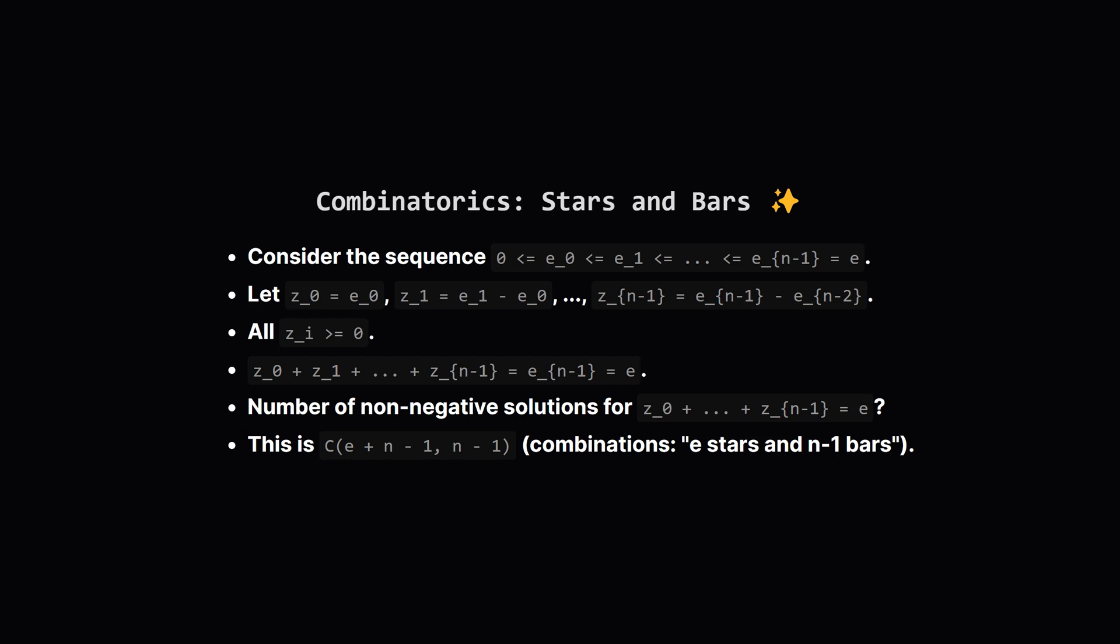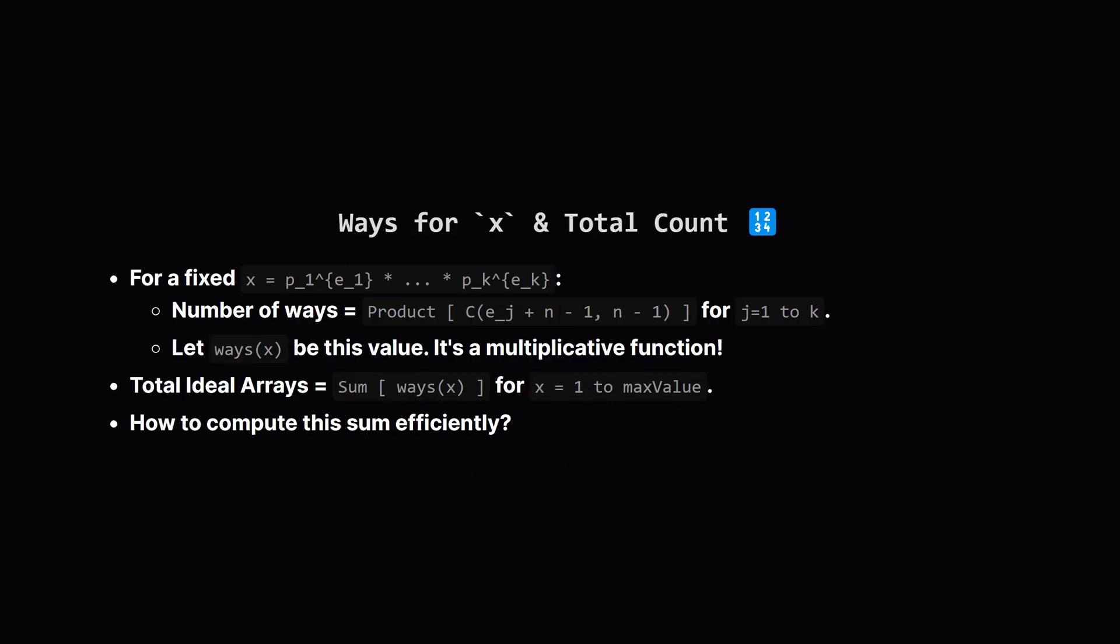So we're looking for the number of non-negative integer solutions to z_0 + z_1 + ... + z_{n-1} = E. This is exactly the stars and bars problem. We have E items (stars) to put into n bins, represented by z_0 to z_{n-1}. The number of ways to do this is C(E+n-1, n-1), or C(E+n-1, n-1). For a fixed ending number X with prime factorization p_1^{e_1} × p_2^{e_2}, etc., the number of ways to form the sequence of exponents for prime p_j is C(e_j+n-1, n-1). Since the choices for each prime are independent, the total number of ideal arrays ending in X is the product of these combination values for all prime factors of X. Let's call this function ways(X).